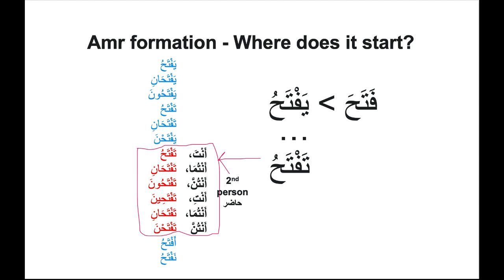Let's go through the chart: yaftahu, yaftahani, yaftahuna, taftahu, taftahani, yaftahna. This is where the second person starts — this is where the command, order, or request will be addressed to. So anta, antuma, antum, anti, antuma, antunna. The corresponding verbs for these are: taftahu, taftahani, taftahuna, taftahina, taftahani, taftahna. Amr needs to be formed with these six verbs.